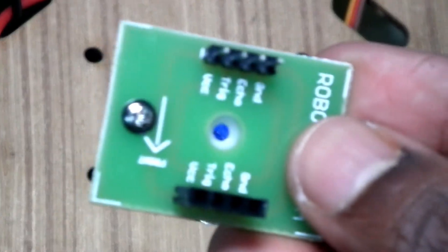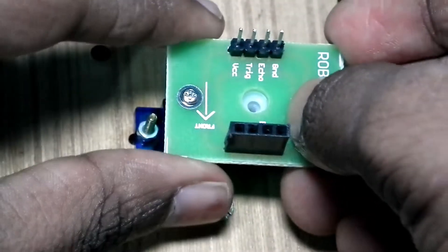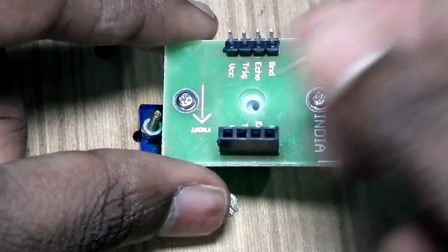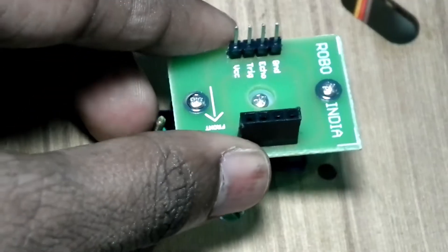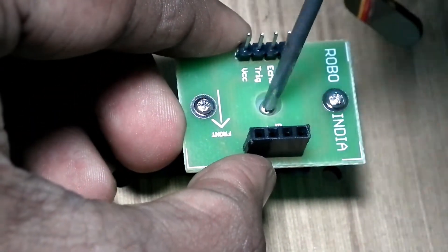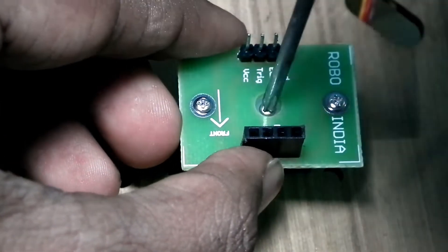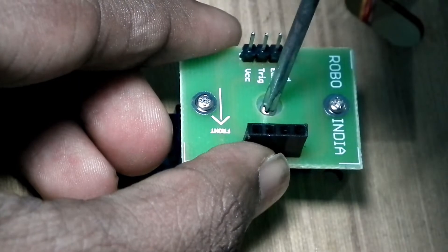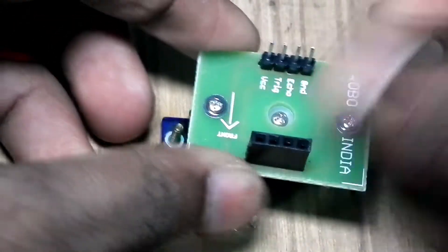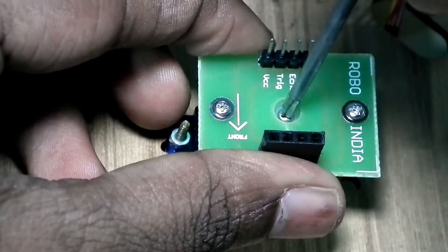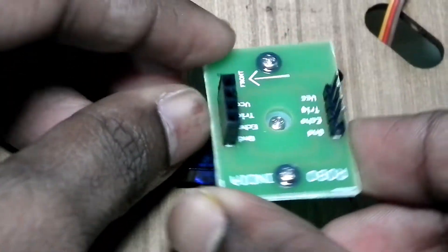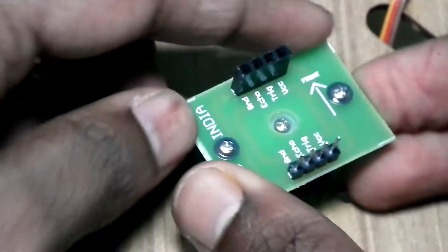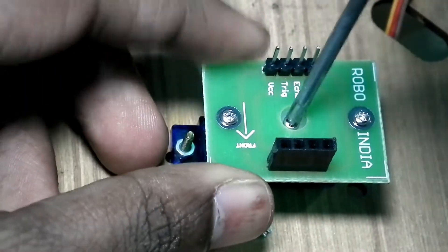I am going to take this base module for the ultrasonic sensor and keep it on top of the servo motor like this. Take the screw which has to be inserted and put it inside. With the help of a screwdriver, tighten it. I think it had been too tightened, so I am just going to loosen it a little bit. Now it is spinning properly, so it is tight enough now.